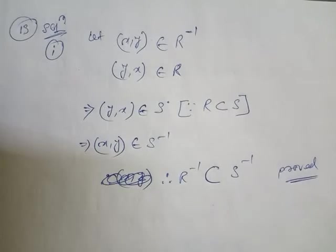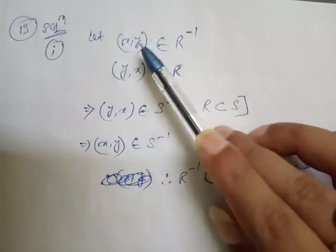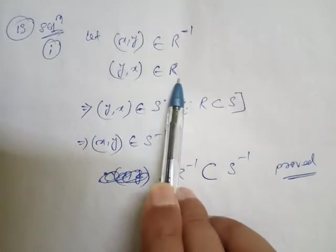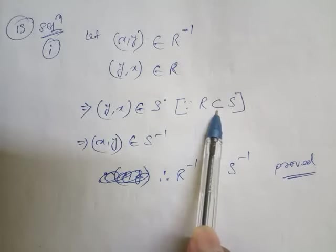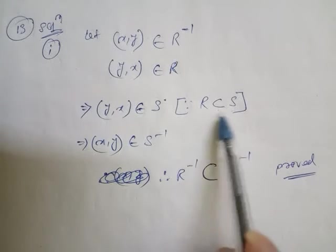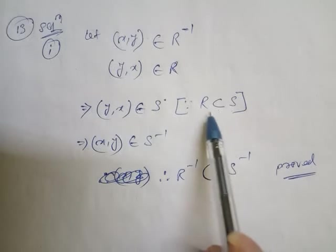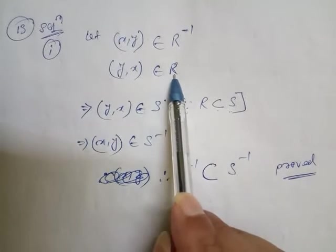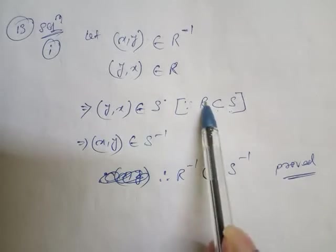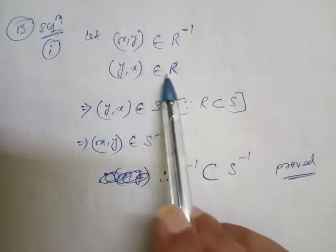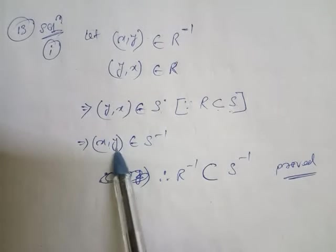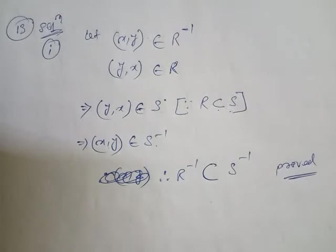Let me repeat again. Let x comma y belong to R inverse, then y comma x belongs to R. Since R is included in S — which is given in the question — y comma x belongs to S also. This means x comma y belongs to S inverse. So first one is proved.